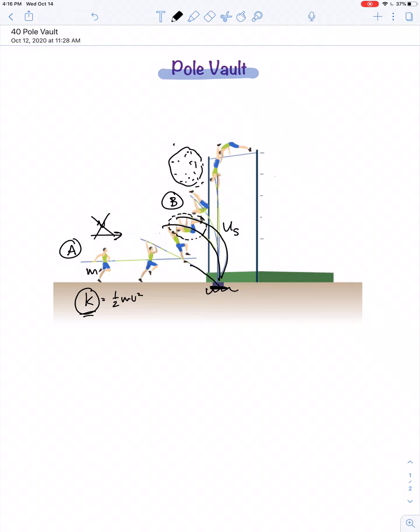If we indeed neglect air resistance, then as the pole becomes less and less flexed, and ultimately no longer flexed at all, then the elastic potential energy of the system is gone, and when the pole vaulter is at their greatest height, we'll say here at point C, then the energy has been transformed into gravitational potential energy.